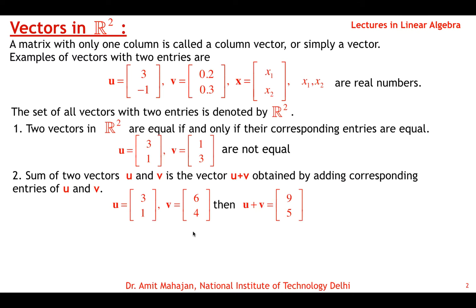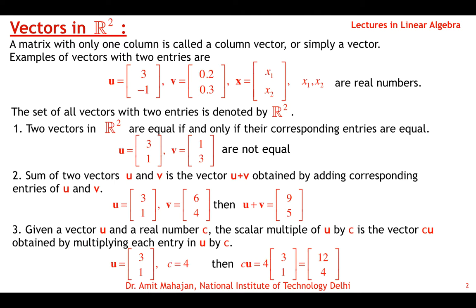The third property is scalar multiplication. Given a vector U and a real number c, the scalar multiple cU is obtained by multiplying each entry of U by c. For example, if U = [3, 1] in R2 and c = 4, then cU = [4×3, 4×1] = [12, 4], which is again a vector in R2.